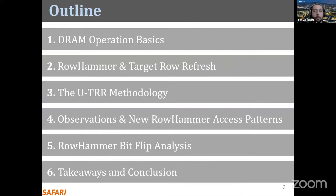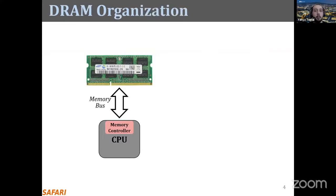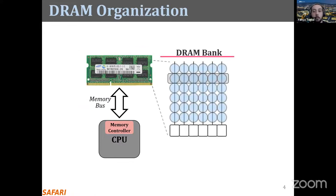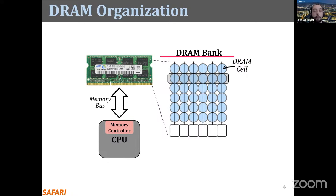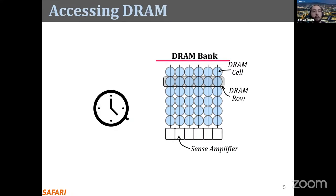So this is the outline of my talk and let's start with basic DRAM background. Here we see a typical system with a CPU and DRAM module that has several DRAM chips, and each chip has multiple banks. These banks are organized as a two-dimensional array of DRAM cells, and in the bank the cells are vertically connected to the sense amplifiers, which can read or write data from the cell.